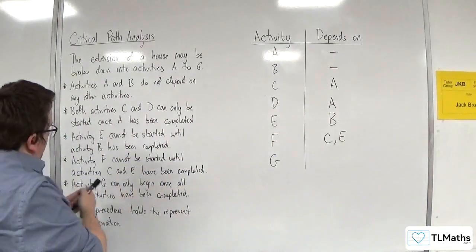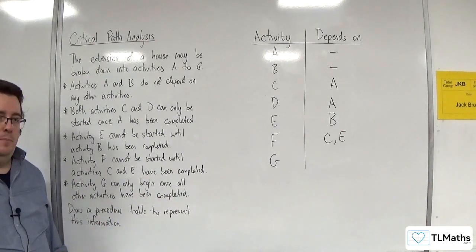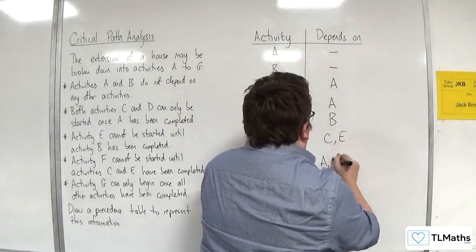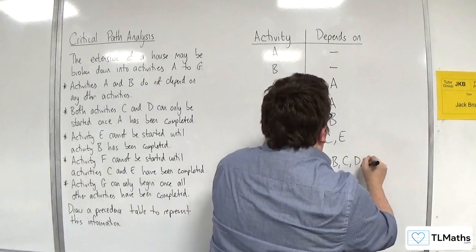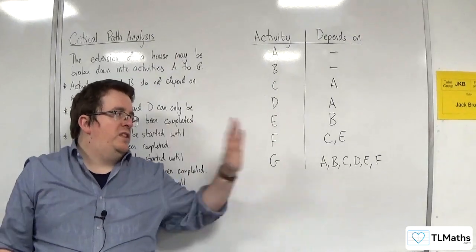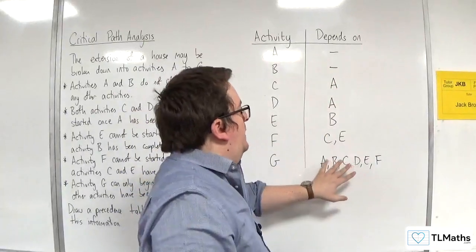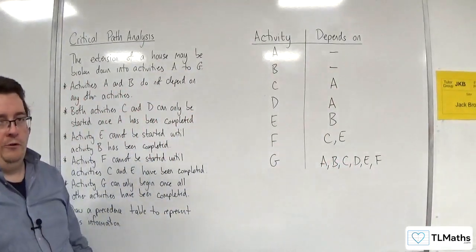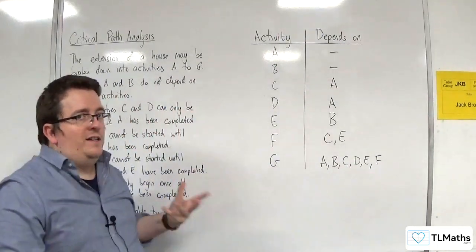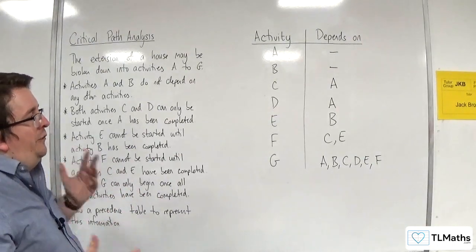Then the last bit, activity G can only begin once all other activities have been completed. Now, you might think, okay, well, I'll just put A, B, C, D, E, and F in there. But we don't need to do that. Really, we want to keep this as nice as possible. So, it would be better if I don't have to put all of those in if I don't need to. So, are there any that I can discard?